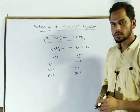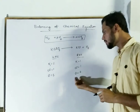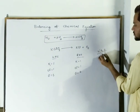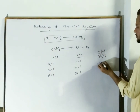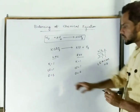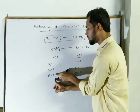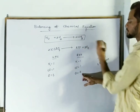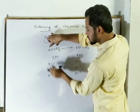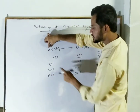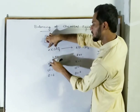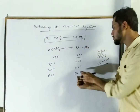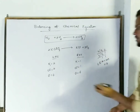The number of potassium and chlorine is 1 in both LHS and RHS. For oxygen, LHS has 3 and RHS has 2. We take the LCM of 3 and 2: LCM is 6. So LHS should be multiplied by 2, giving 3 × 2 = 6 oxygen, and RHS should be multiplied by 3, giving 2 × 3 = 6 oxygen. The number of potassium becomes 2 and chlorine becomes 2 on the RHS side. Now oxygen is balanced with 6 on both sides.